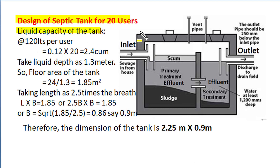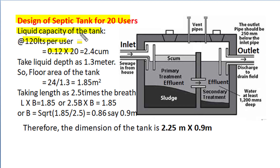Let's make a typical design of septic tank for 20 users. We can find out the liquid capacity of the septic tank by considering 120 litres of liquid waste per user. For 20 users, the per-day liquid waste capacity will become 2400 litres. Since 1000 litres corresponds to 1 cubic metre, the volume of liquid handled by the septic tank is 2.4 cubic metres.